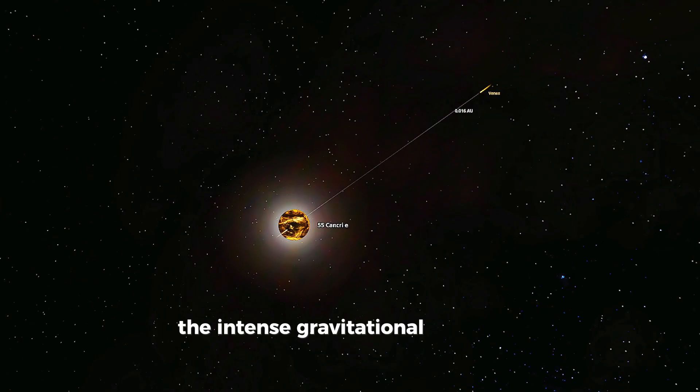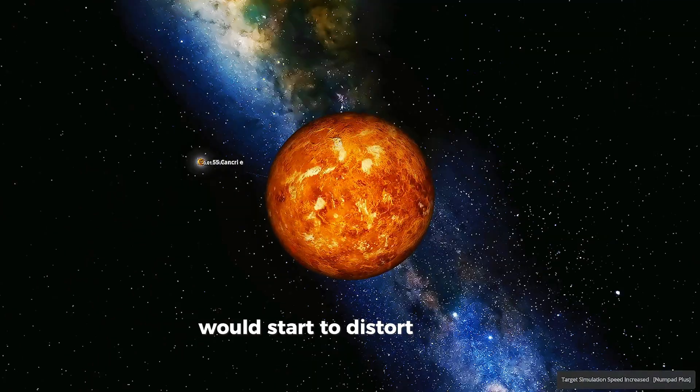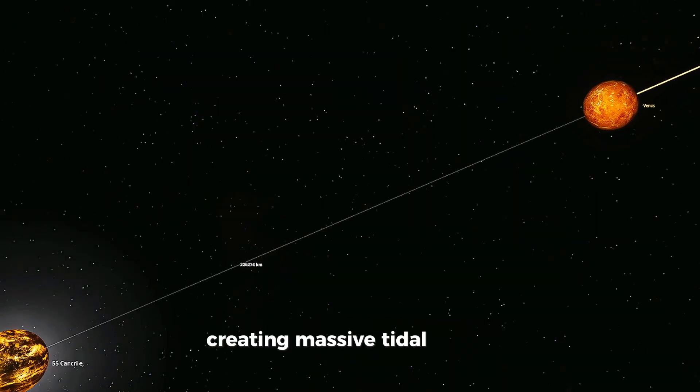The intense gravitational pull from 55 Cancri e would start to distort Venus' shape, creating massive tidal forces.